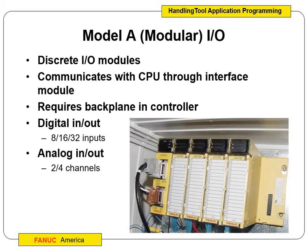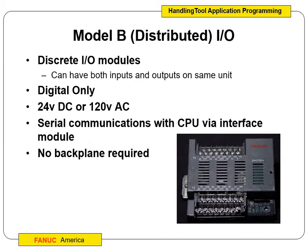This is very similar to the PLC class. We have modular I/O — modular inputs and outputs. Modular means that we can add to them; we can keep adding modules to grow. They are discrete I/O modules and they communicate with the CPU through the interface module, and it does require a backplane in the controller so we can attach and connect everything. Digital inputs and outputs can come in 8, 16, or 32, and we can also have analog inputs and outputs. If we look at model B controllers — digital only, 24 volt DC or 120 volt AC, no backplane required — but ours all look like the modular type.